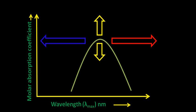In this video I will focus on the different shifts or effects present in UV visible spectroscopy. Here in this diagram you can see that wavelength is on the x-axis and molar absorption coefficient is on the y-axis.